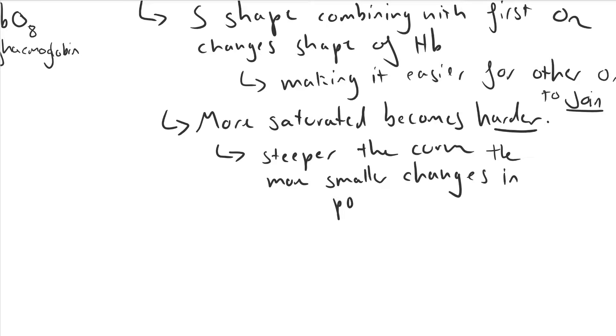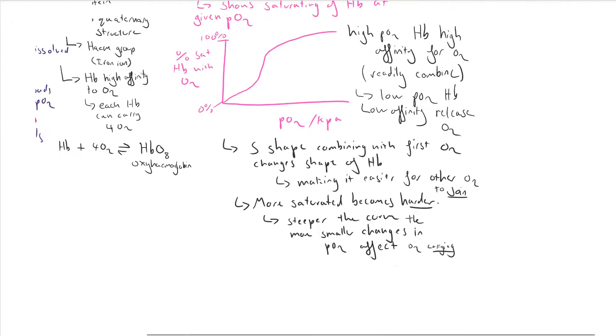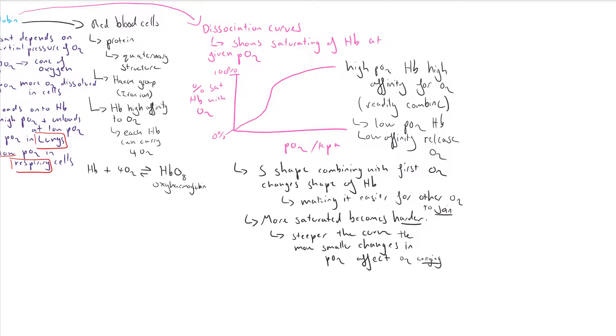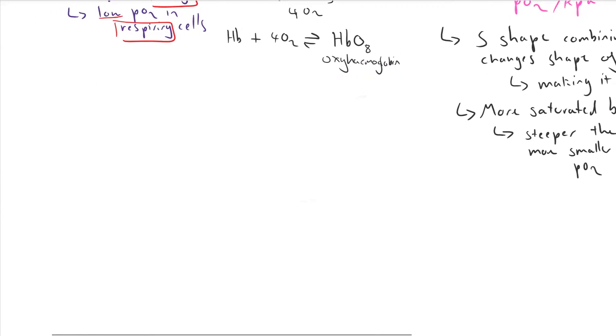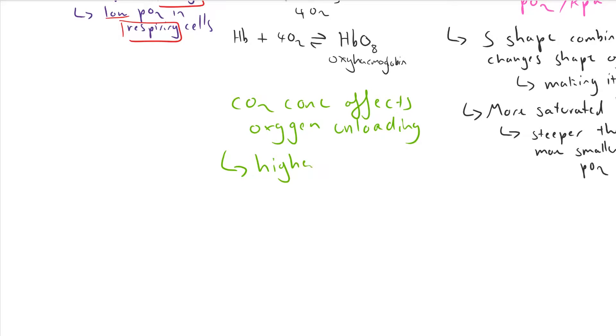So next we're going to look at the carbon dioxide concentration and how that also affects the oxygen unloading. So we've got our dissociation curve with saturation on one side and partial pressure on the other. We're going to look at the Bohr effect, which is the effect carbon dioxide has. And so hemoglobin essentially gives up oxygen more readily at higher partial pressures of carbon dioxide.